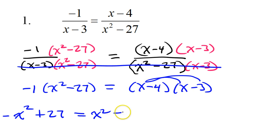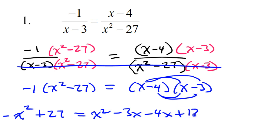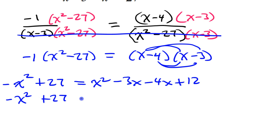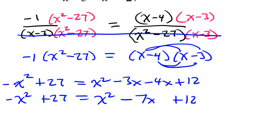x times negative three is negative three x. Negative four times x is negative four x. Negative four times negative three is positive 12. I would like to combine like terms. So, I have negative x squared plus 27 is equal to x squared minus 7x plus 12.